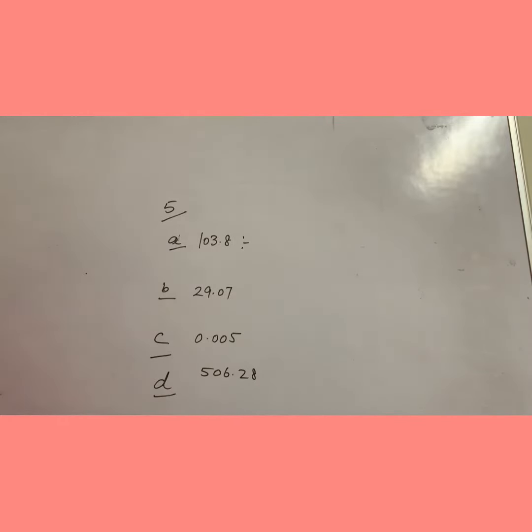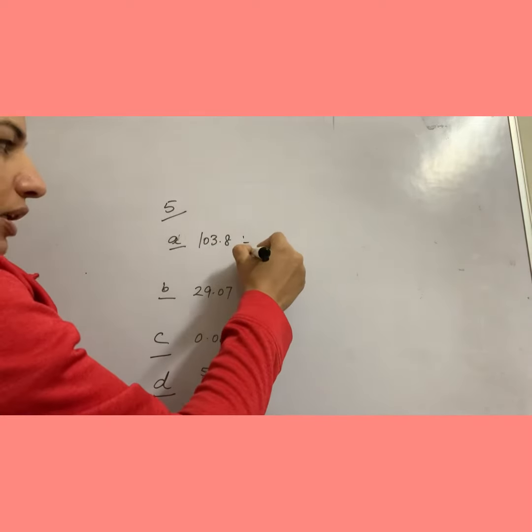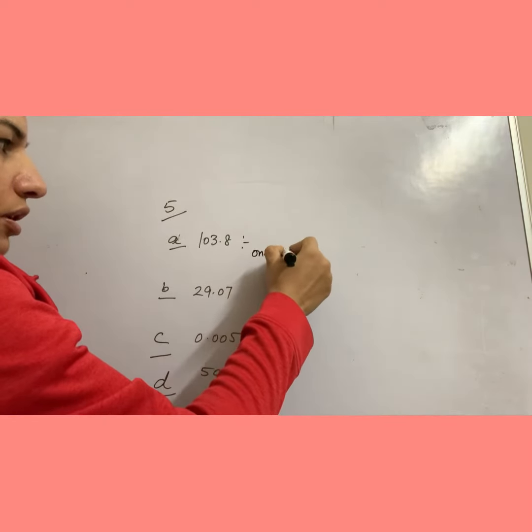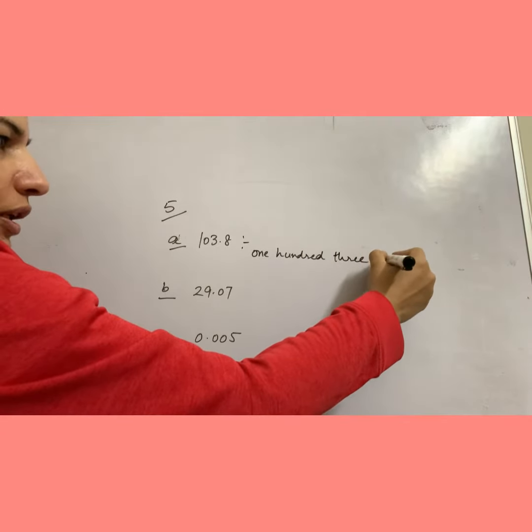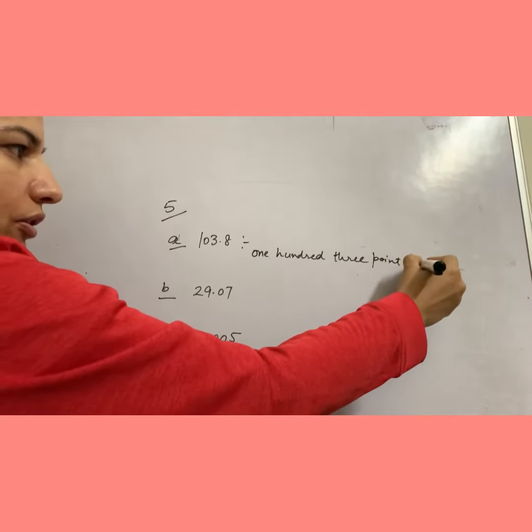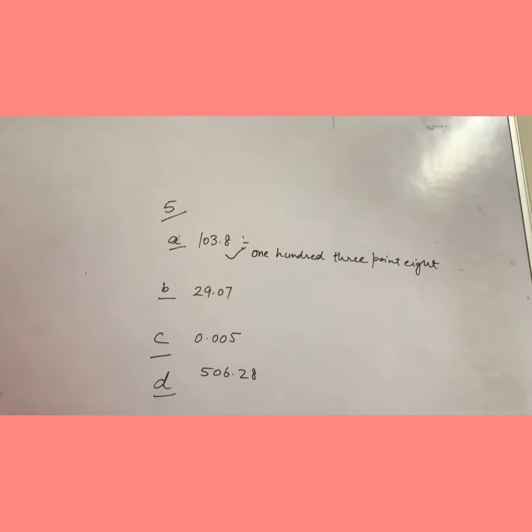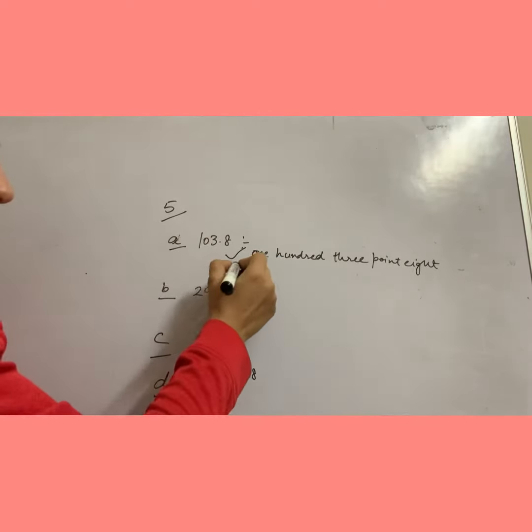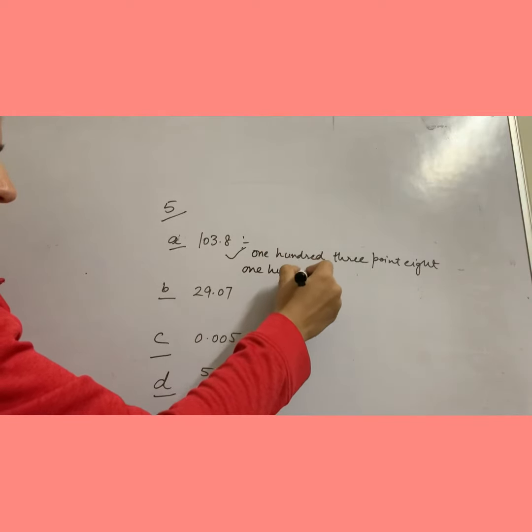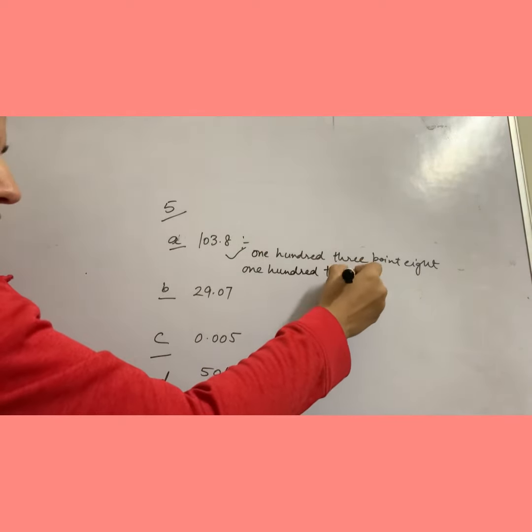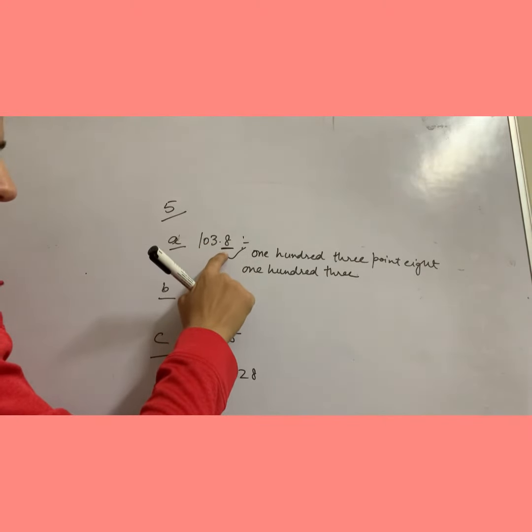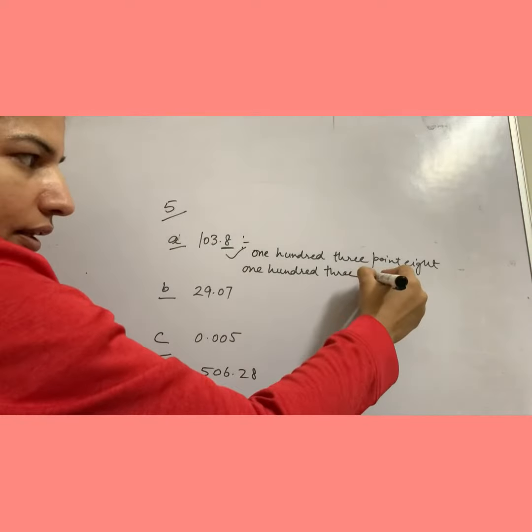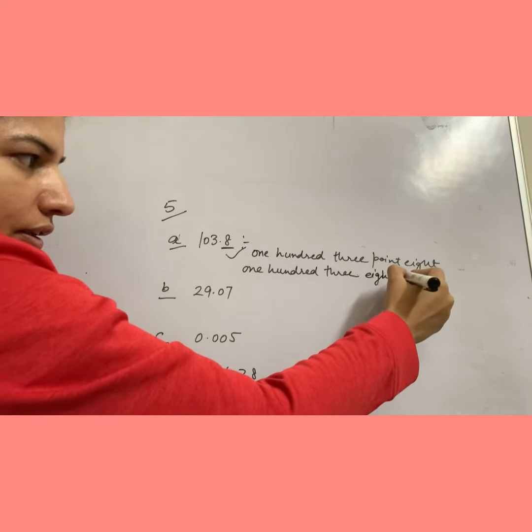I'm writing one hundred three point eight. This is also correct. And we can write it one hundred three, what is this after point? We can write it eight tenth, eight tenth.